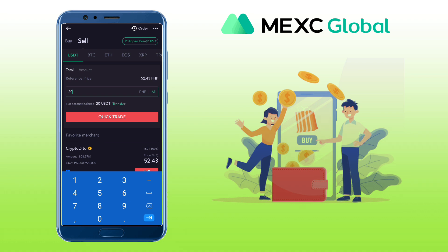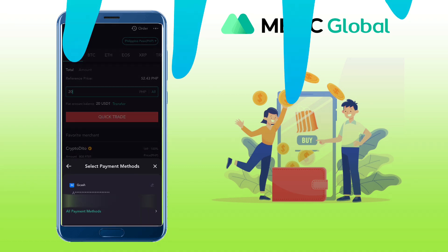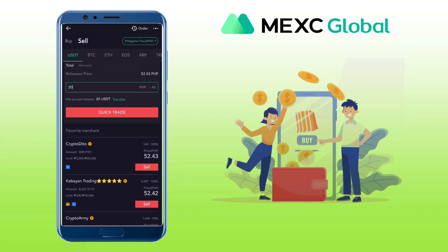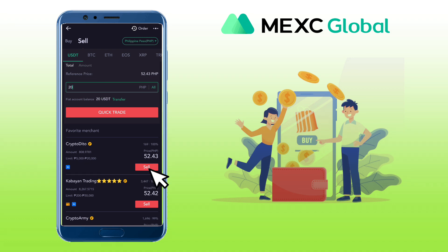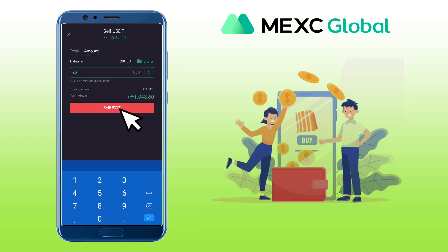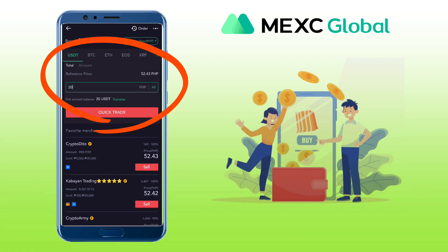For a quick trade, just input the amount you want to sell and the system will automatically pick the best offer for you at that moment based on your selected payment methods. Just tap Quick Trade after inputting the amount and a pop-up will show available merchants. Alternatively, you can choose your advertiser from the list — for example, picking Crypto Dito, where you can see the payment method they will use to pay you. You put the total fiat and crypto amount and tap Sell to proceed. Personally, I prefer the Quick Trade feature for more automation.